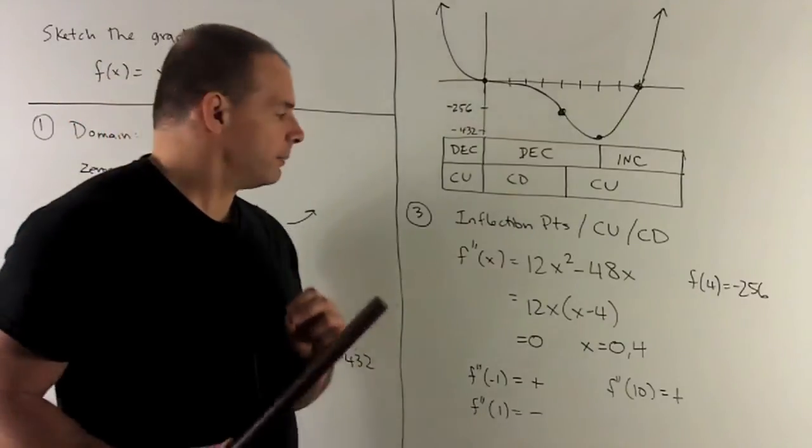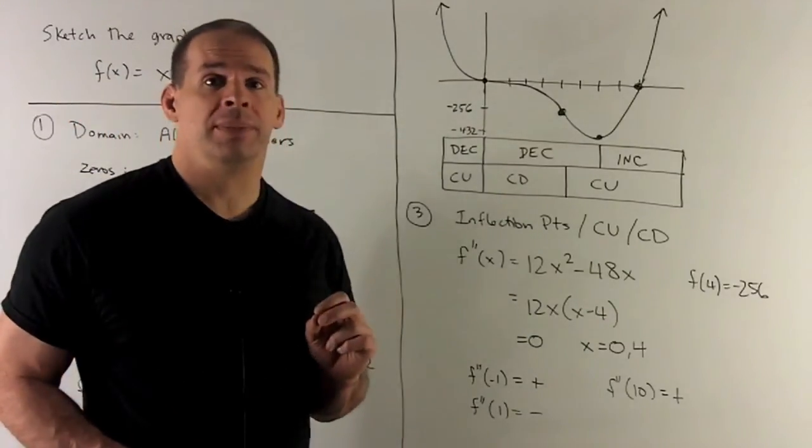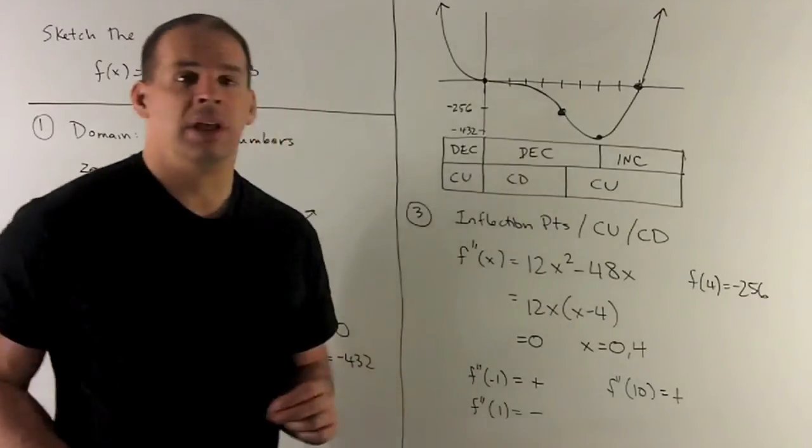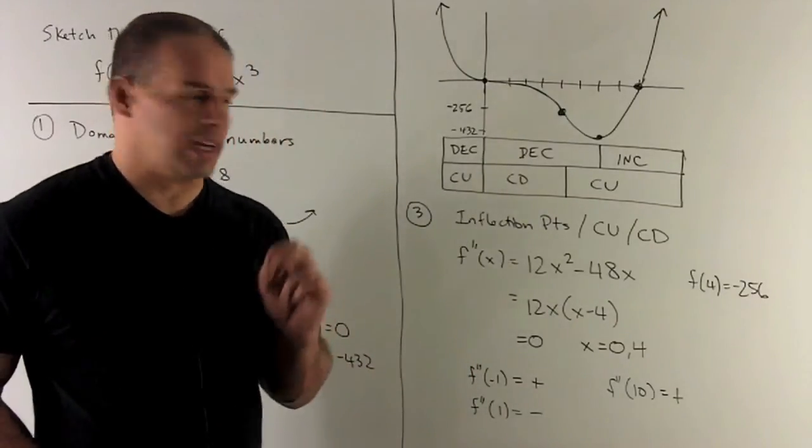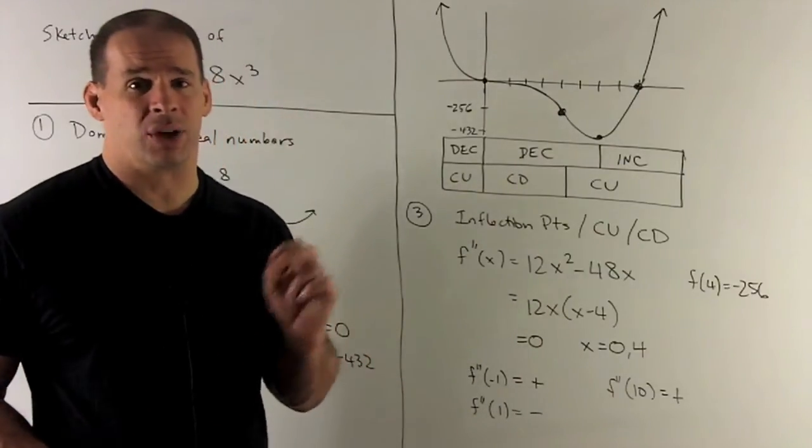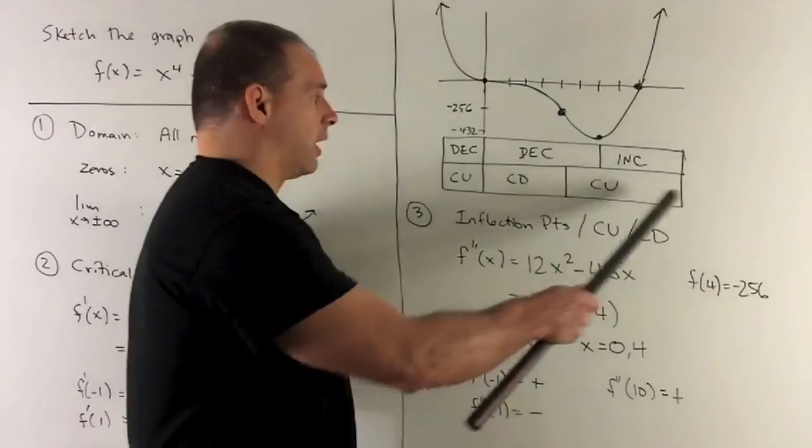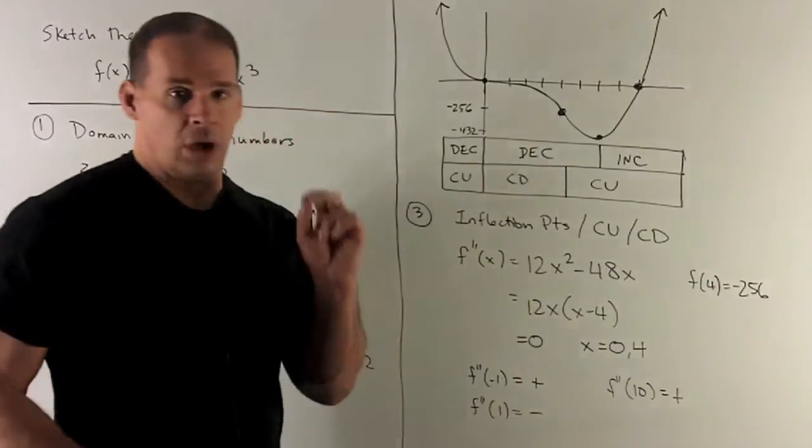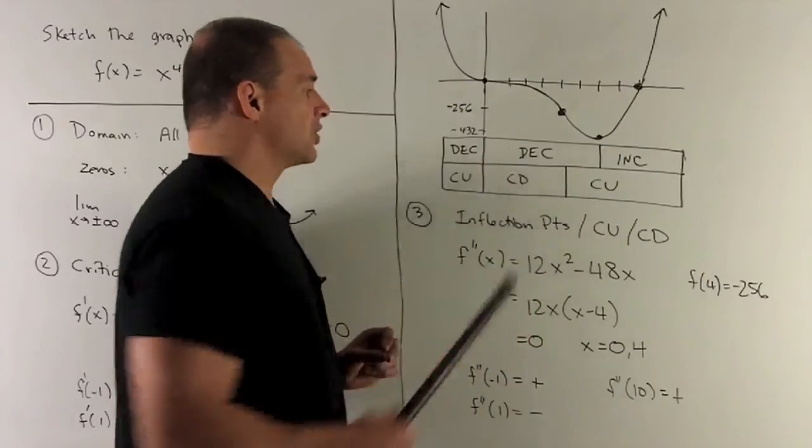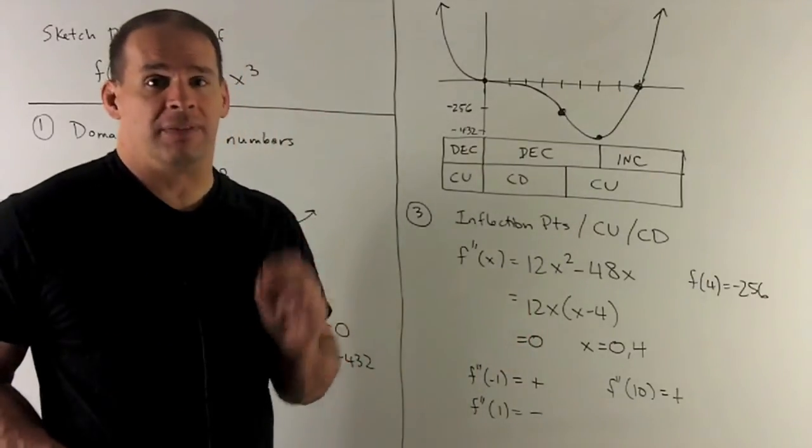If I put 1 in, I have 12 times 1 times -3, it's going to be negative, so we're concave down on the middle region. And then on the last region, we're putting in a 10: 12 times 10 times 6, that's going to be positive, so we're concave up over here. We note, at the point x = 4, the concavity is going to change, so that's going to be an inflection point.